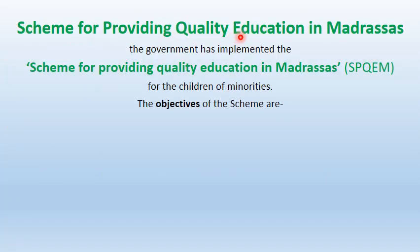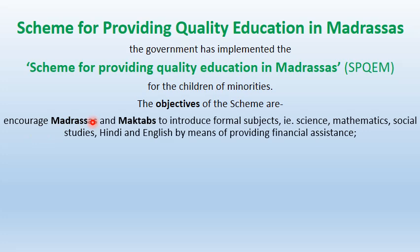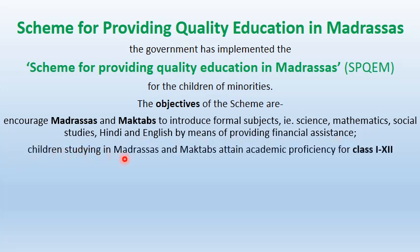Scheme for Providing Quality Education in Madrasahs (SPQEM): The government has implemented SPQEM for the children of minorities. The objectives of the scheme are to encourage Madrasahs and Maktabs to introduce formal subjects like science, math, social science, Hindi, and English by means of providing financial assistance, and to help children studying in Madrasahs and Maktabs attain academic proficiency for classes 1 to 12.